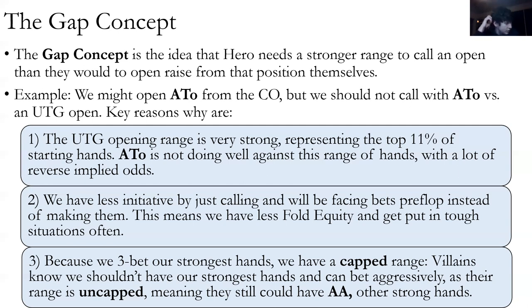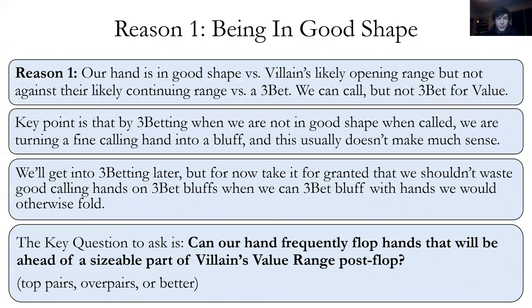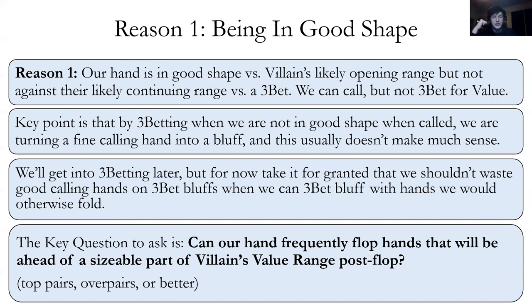Even still, we're going to call decently often. The question is: what are the reasons we could justify a call? There are four of them. Reason one is being in good shape — our hand isn't good enough to three-bet for value, but we have a decent amount of equity. If we three-bet for value and get called or raised, we don't stand a chance. And we wouldn't want to bluff-raise with a hand that's good enough to call anyway — why bluff with a hand we could just call with?